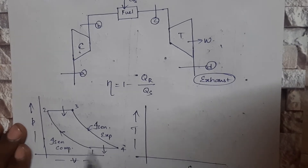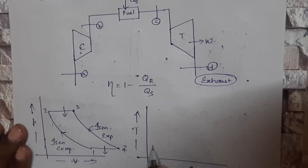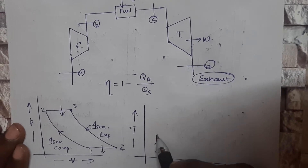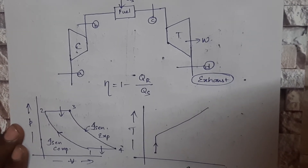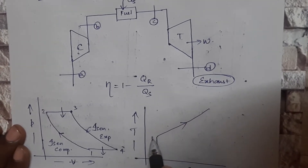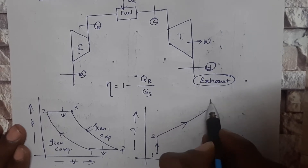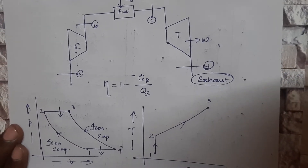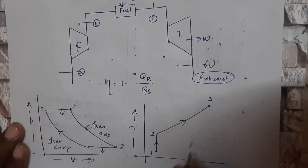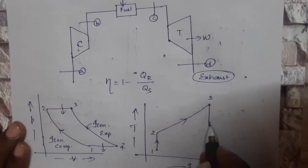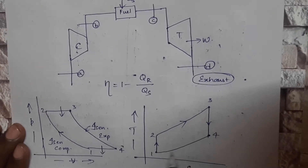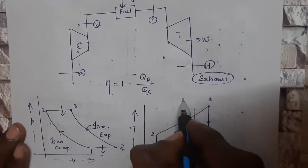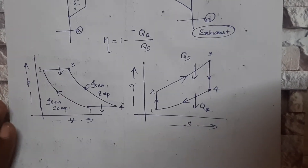In the TS diagram, from 1 to 2, pressure and temperature are increasing — this is an isentropic process, so entropy is constant. From 2 to 3, it is a constant pressure heat addition process; temperature shoots up and entropy also increases due to the disorderness from combustion. From 3 to 4 is isentropic expansion with constant entropy, and from 4 to 1 is the heat rejection process.